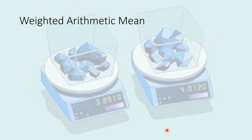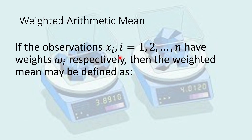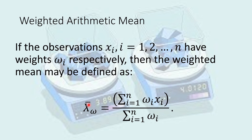Sometimes we are given weights for different observations, and for that purpose you need to find a weighted mean or weighted arithmetic mean. For observations xi with corresponding weights omega-i, the weighted mean x-omega-bar is defined by multiplying every observation by its corresponding weight, adding them, and dividing by the sum of weights. The formula is: summation of omega-i times xi divided by summation of omega-i.